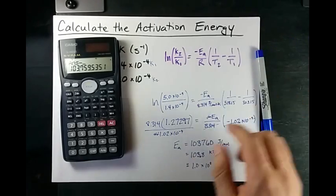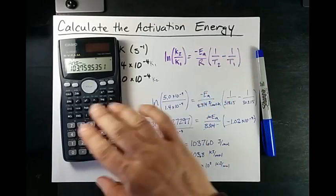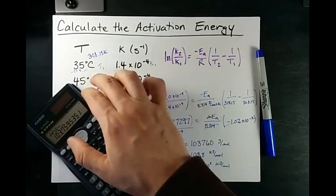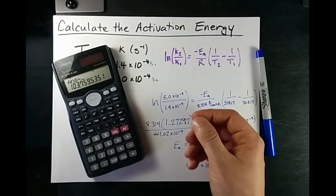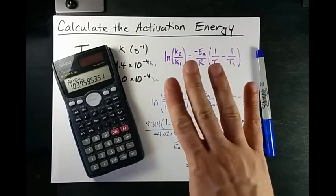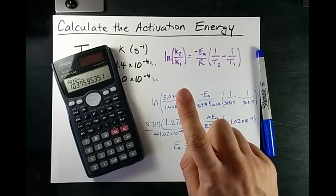Anyways, there you go. You could solve for the activation energy if you're given two rate constants at two temperatures by plugging them into this equation. You can also do it with a graph, which I will do for you in 3, 2, 1.